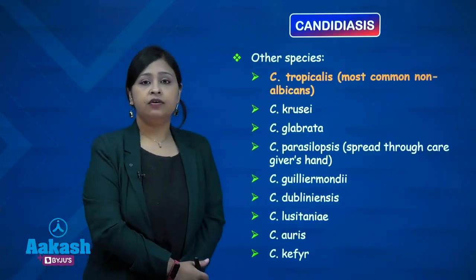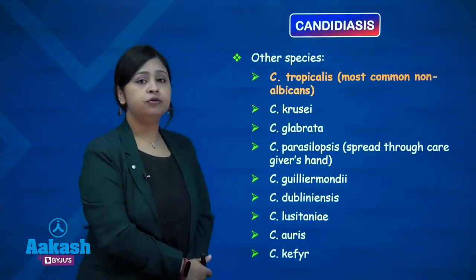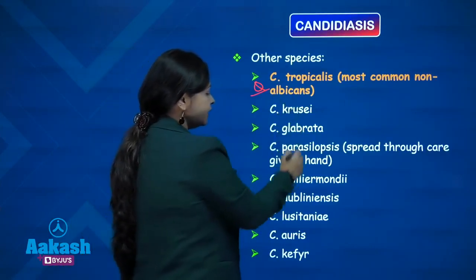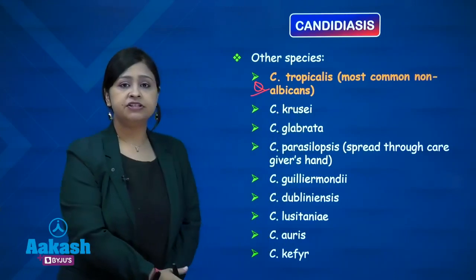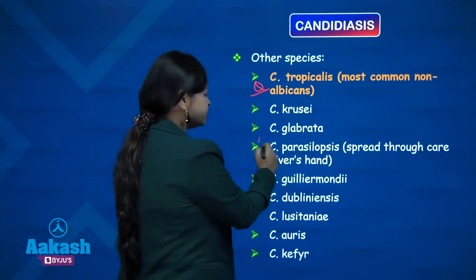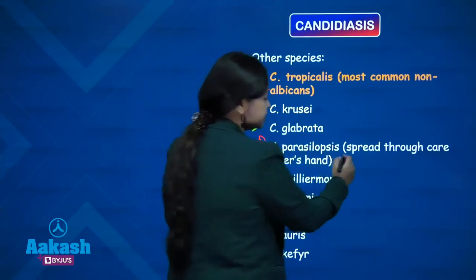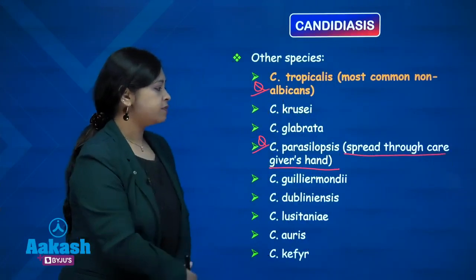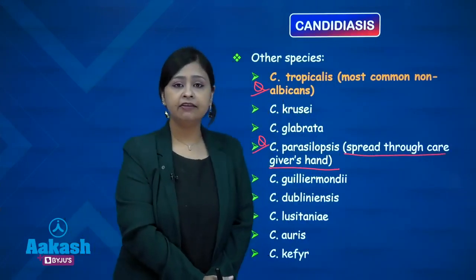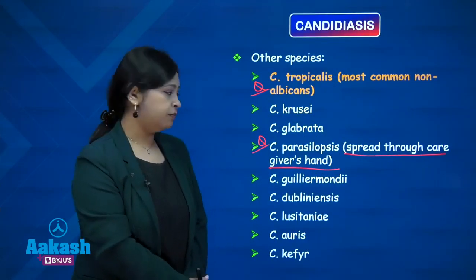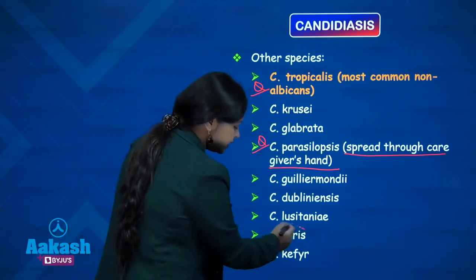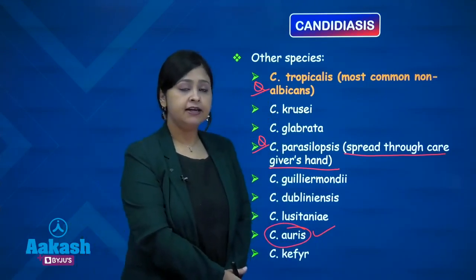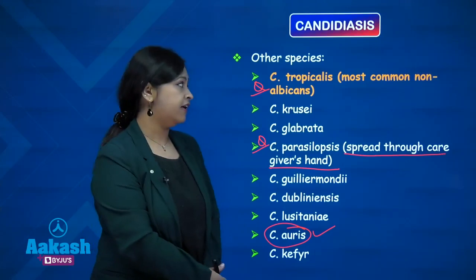The other species of Candida are known as Candida non-albicans and these also cause human infections. Among them, the most common is Candida tropicalis. An important exam point is Candida parapsilosis, which is known to spread through caregiver hands and hence is an important cause of nosocomial infections. Another important point to note is Candida auris, which is a very resistant strain of Candida, resistant to almost all antifungals available.